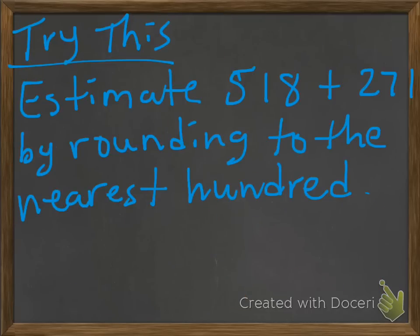Let's try this one. Estimate 518 plus 271 by rounding to the nearest hundred. Go ahead and pause the video, try it, and come back. Good luck.